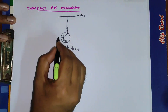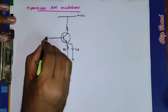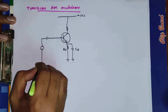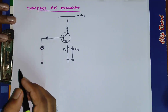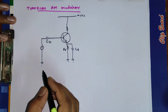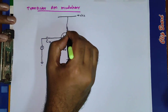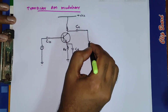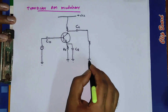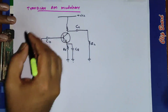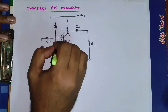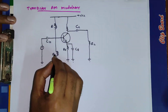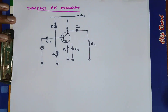Now in the base you will have the input capacitor CIN and your signal — here you will have the carrier signal. This is your input capacitor CIN. Now here you will have the coupling capacitor CC and here is the load resistance RL. Now we have to form the voltage divider bias, so you have two resistances R1 and R2. This end is grounded. So this is the circuit diagram.